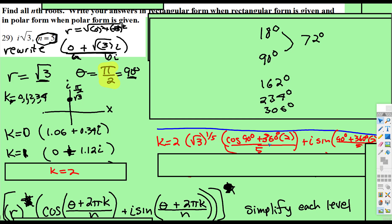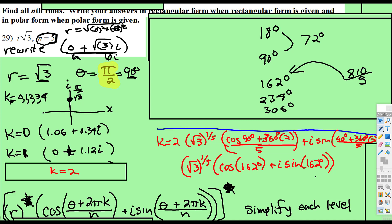So now we have 360 times 2 is 720, 720 plus 90 is 810, 810 divide 5, you guessed it 162 degrees. And then when you multiply this times cosine of 162, you get negative 1.06. And then the fifth root of √3 times sine of 162, you get 0.34i.